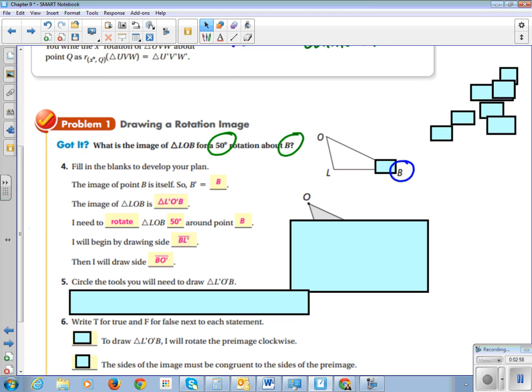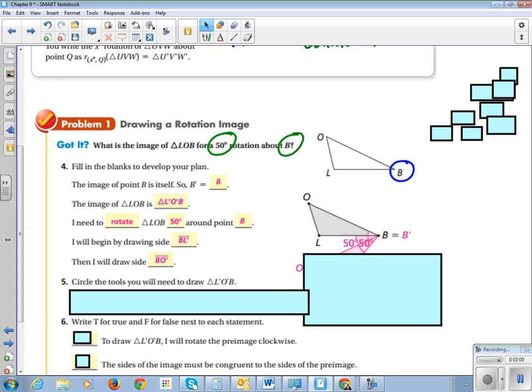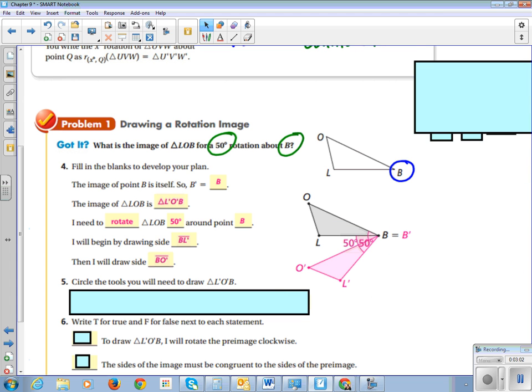Then I will draw BO prime. And here's a question that I have for you guys. Does it matter if I draw BO first or BL first, and what would the difference between the two be?